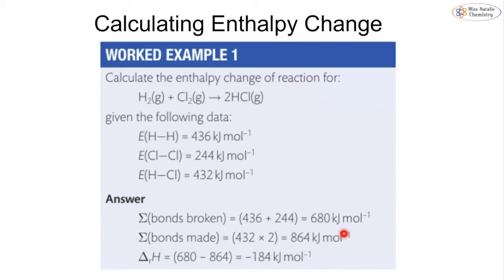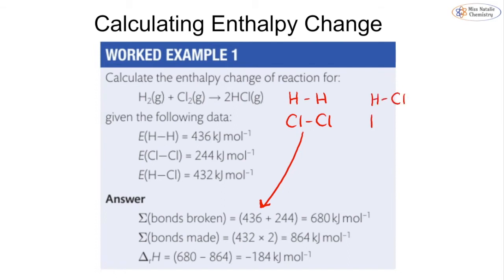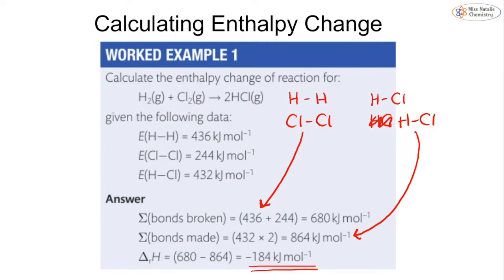For example: H₂ + Cl₂ → 2HCl. Bonds broken: H–H (436 kJ/mol) and Cl–Cl (244 kJ/mol), giving a sum of 680 kJ/mol. Bonds made: two H–Cl bonds, so 2 × 432 = 864 kJ/mol. ΔH = 680 − 864 = −184 kJ/mol. The negative sign confirms this is an exothermic reaction overall.